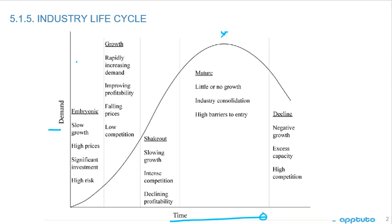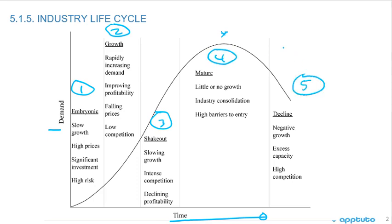What's really important here is you need to memorize each stage of the industry lifecycle. It starts with embryonic as number one, number two is the growth stage, number three is the shakeout, number four is the mature stage, and number five is the decline stage.